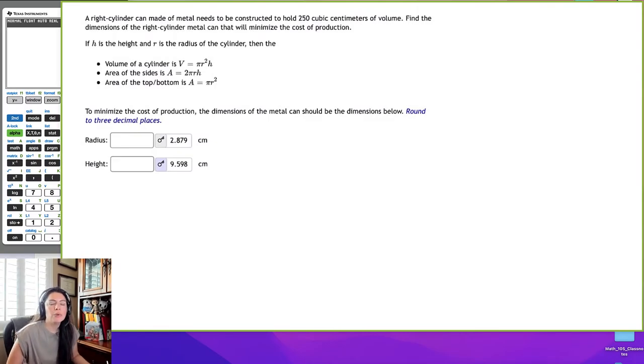Hi! In this example, we're going to do an optimization problem. And we're going to optimize a right cylinder can and minimize the cost of production.